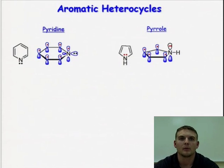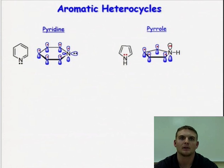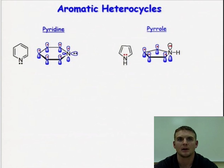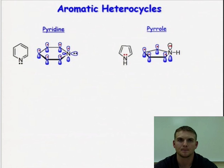In this webcast and the following webcasts, we will continue our discussion of aromatic heterocycles and bring to light some of the properties associated with these systems. First, let's quickly review the structures of pyridine and pyrrole as shown here. Notice both are nitrogen-containing heterocycles, but differ in their organization of electrons around the heteroatom.